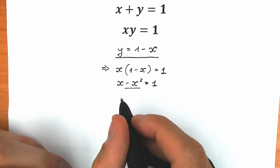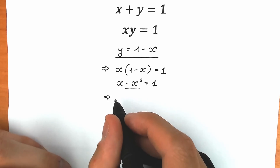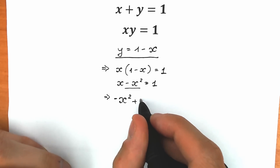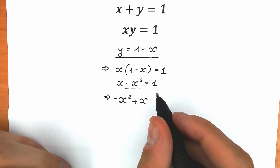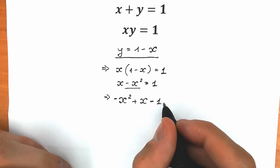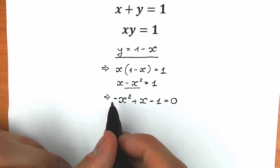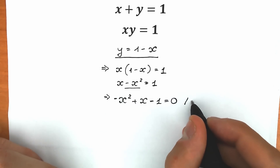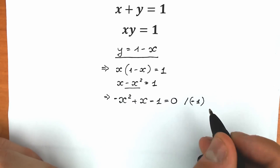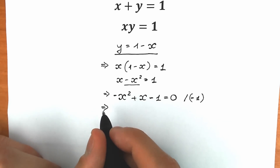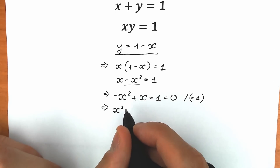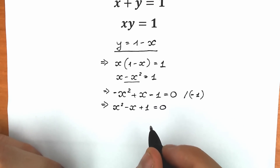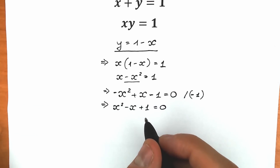We write minus x squared on the first position, then plus x, and let's bring the 1 from the right side to the left side — as a result we have minus x squared plus x minus 1. We prefer addition, so let's multiply both sides by minus 1. When we do that, we get x squared minus x plus 1 equal to 0. So we have a basic school quadratic equation.